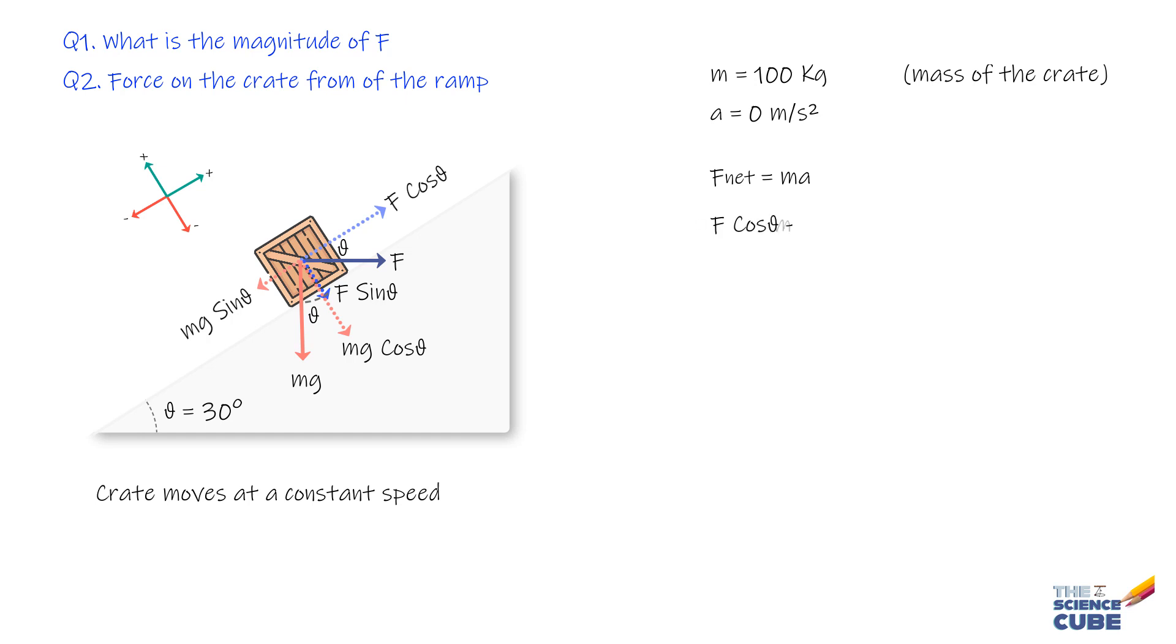F cos theta minus Mg sin theta equals M times 0, or F cos 30 minus 100 times 9.8 times sin 30 equals 0. When we solve for F, we get F equals 566 newtons.